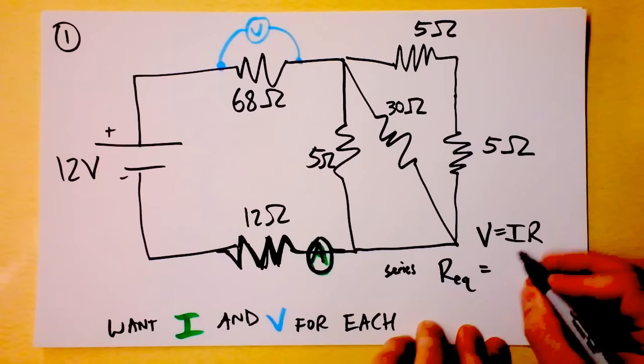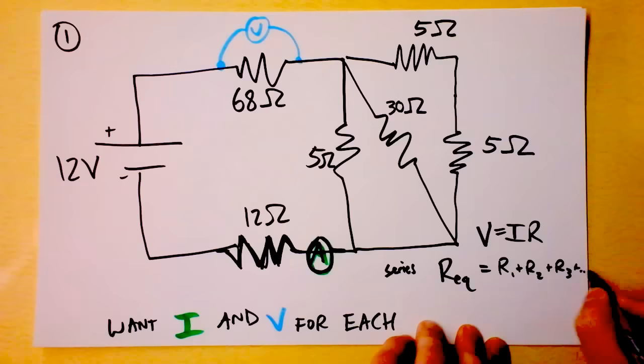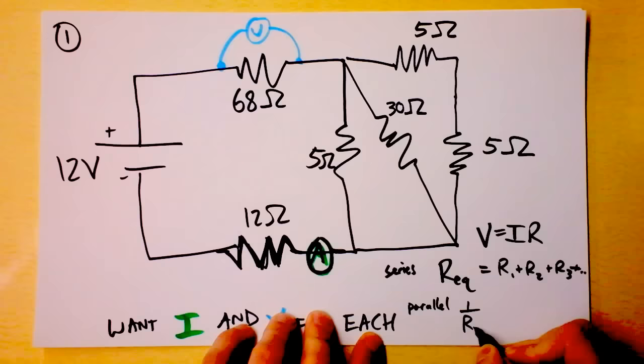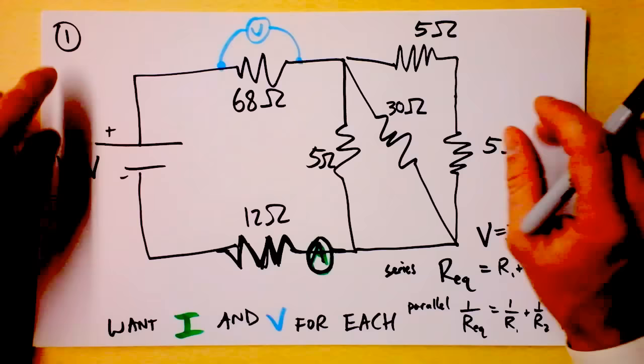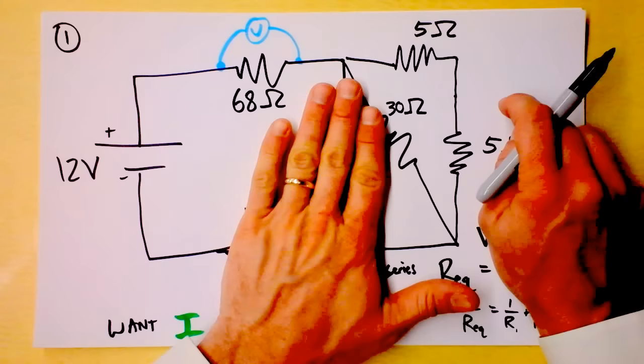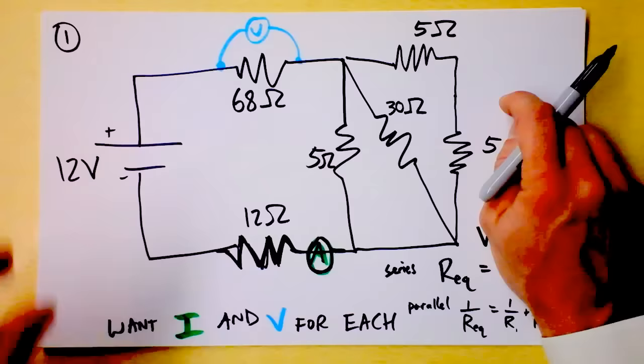For series, the equivalent resistance is R1 + R2 + R3, etc. And for parallel, 1 over the equivalent resistance is the sum of the inverses of the individual resistances. My plan is to use these three simple relationships — V = IR, series, and parallel — to solve the entire problem, filling in V, I, and R for each resistor.